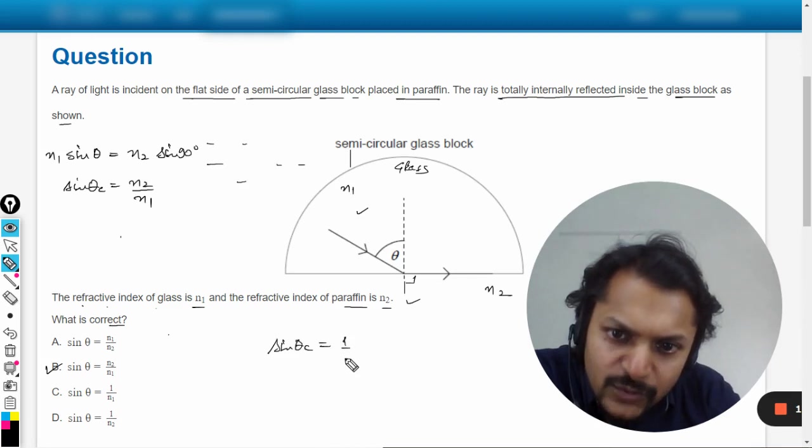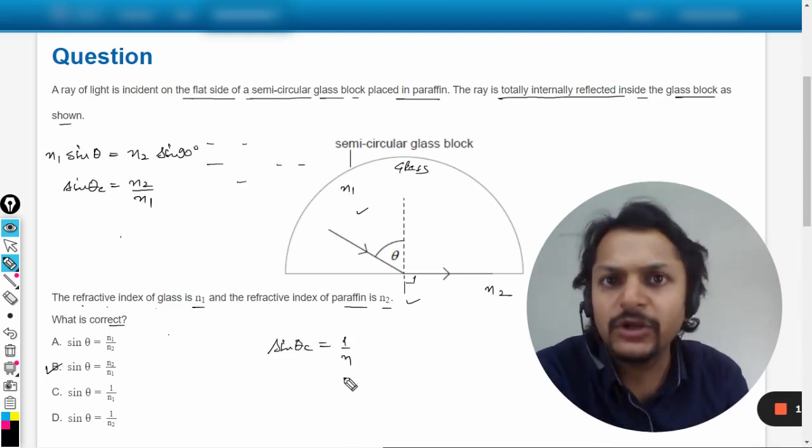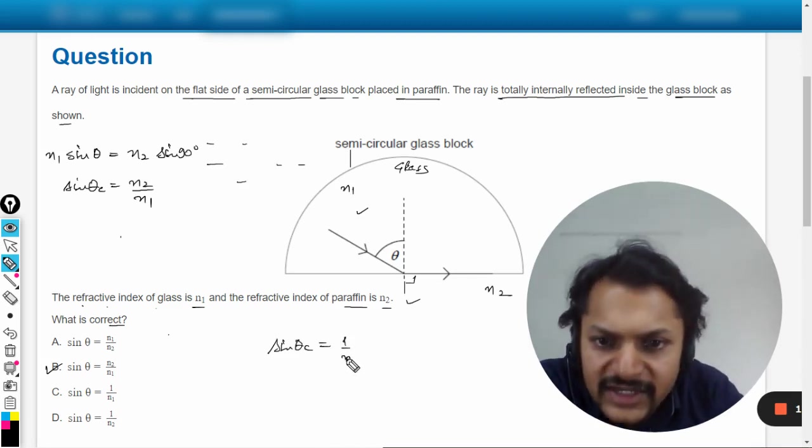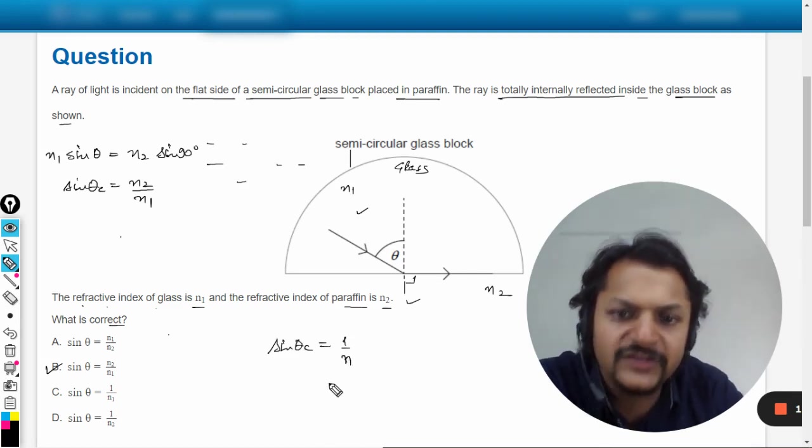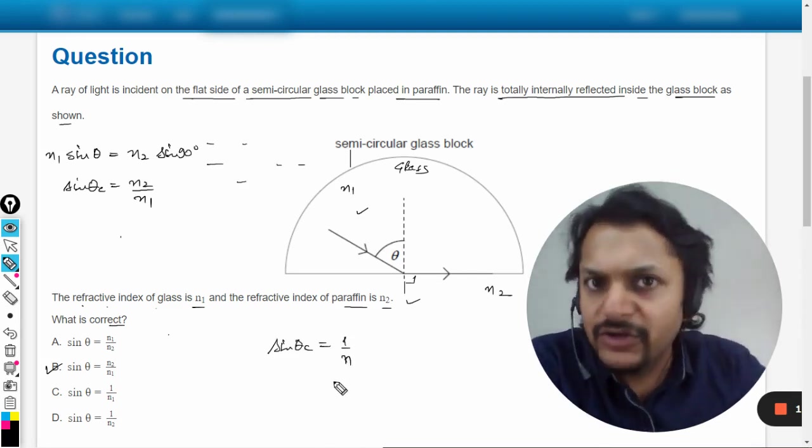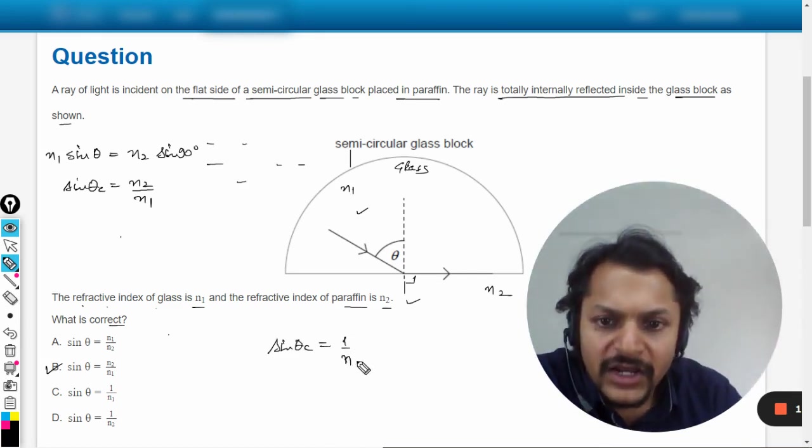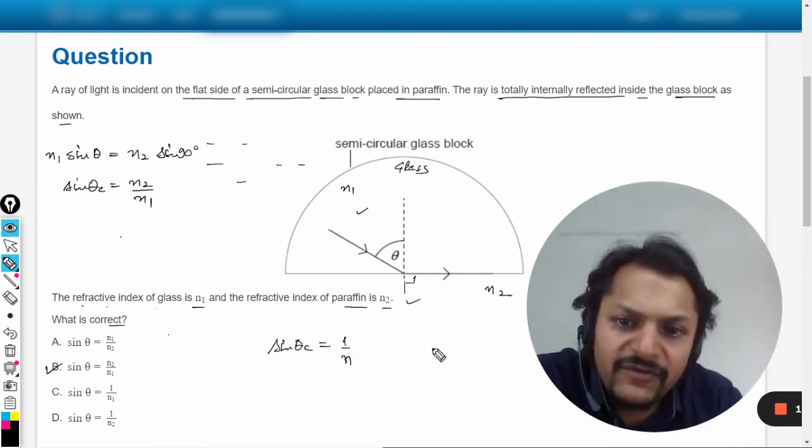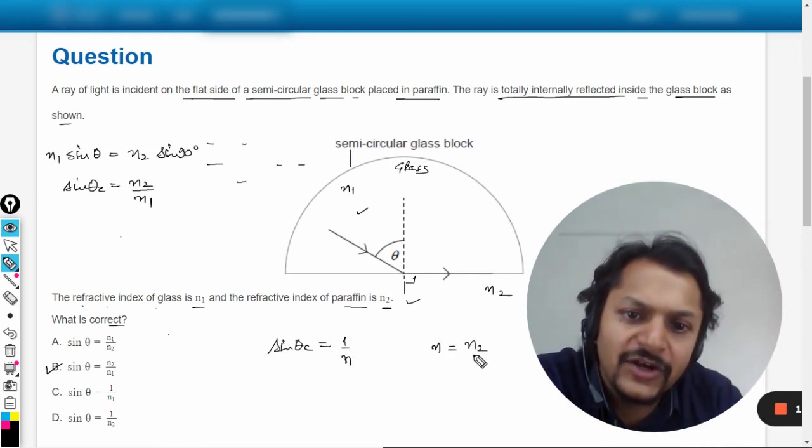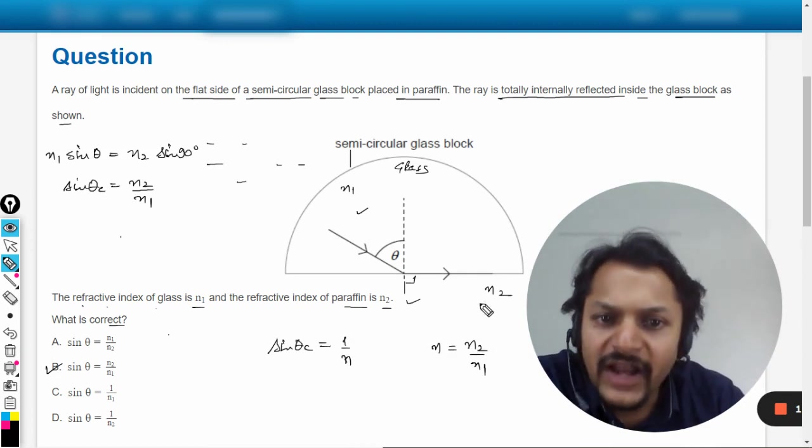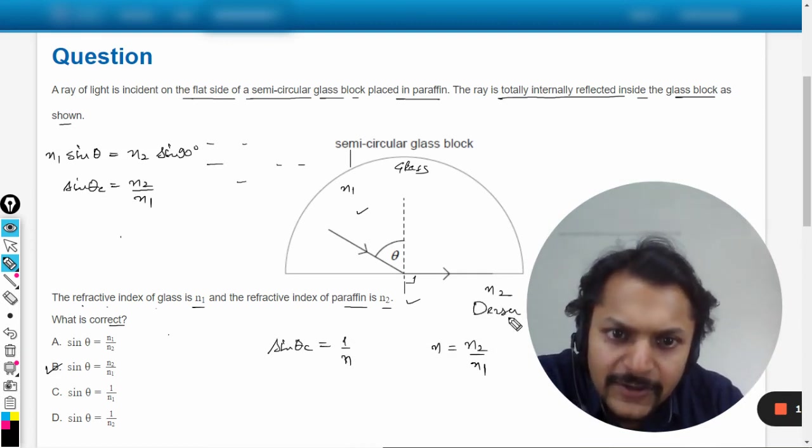So we know that sine of theta critical is 1 divided by n. So this formula would be given there. So let us say sine theta is 1 by n. You have to check your data booklet if it is given there or not. Now this n can be very easily replaced with n2 divided by n1, where n2 has to be denser and n1 has to be rarer.